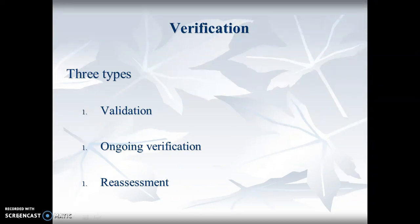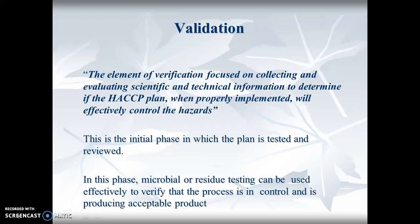Three types of verification: you need to validate, you need ongoing verification, and you need reassessment of your HACCP plan. Validation is the element of verification focused on collecting and evaluating scientific and technical information to determine if the HACCP plan, when properly implemented, will effectively control the hazards. This is done in the initial phases to make sure your plan will do what it says it's going to do.